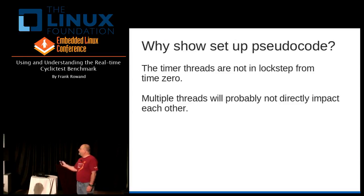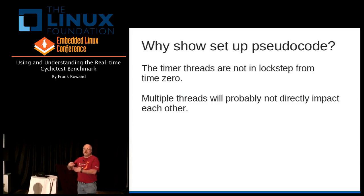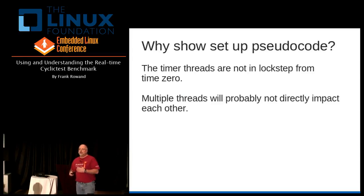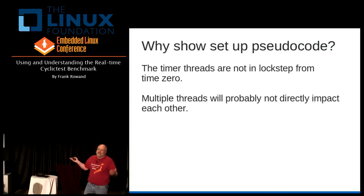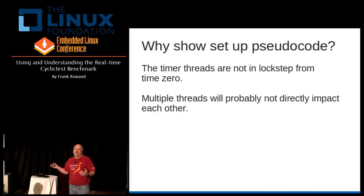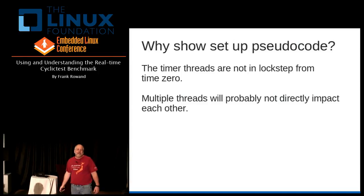Those timer threads are not necessarily in lockstep. Since they're not in lockstep, they're probably waking up at slightly different times. Depending on how many threads you have versus how many processors, you might overload it enough so that they do wake up and overlap a little bit. And even in the vanilla case, it's kind of random timing — maybe they'll overlap a little bit, maybe not. I can't tell you ahead of time for any given system.